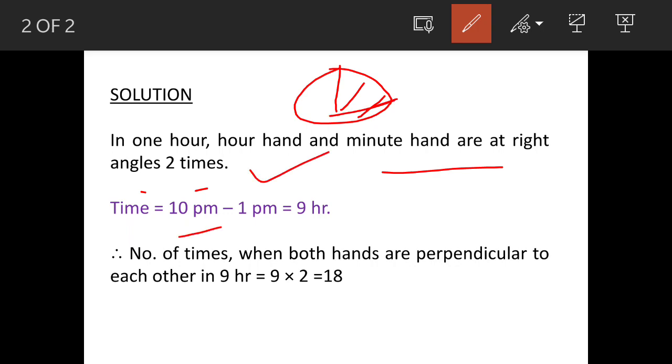The duration from 10 pm to 1 pm is 9 hours. And each hour they are at right angle 2 times. So for the 9 hours, how many times will they be at right angle? 18 times.